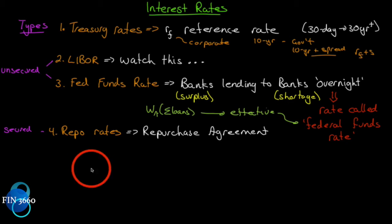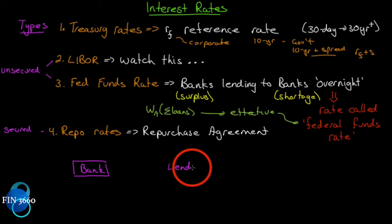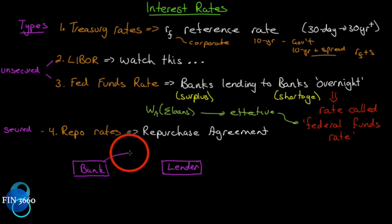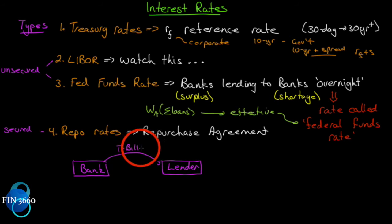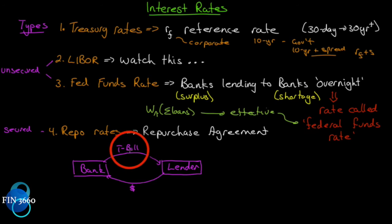Let's say we have a bank on one side of the transaction and a lender on the other side. The lender can be the central bank, but doesn't have to be. The bank will give the lender a T-bill as security, and the lender will lend money against that T-bill — so it's a secured loan.